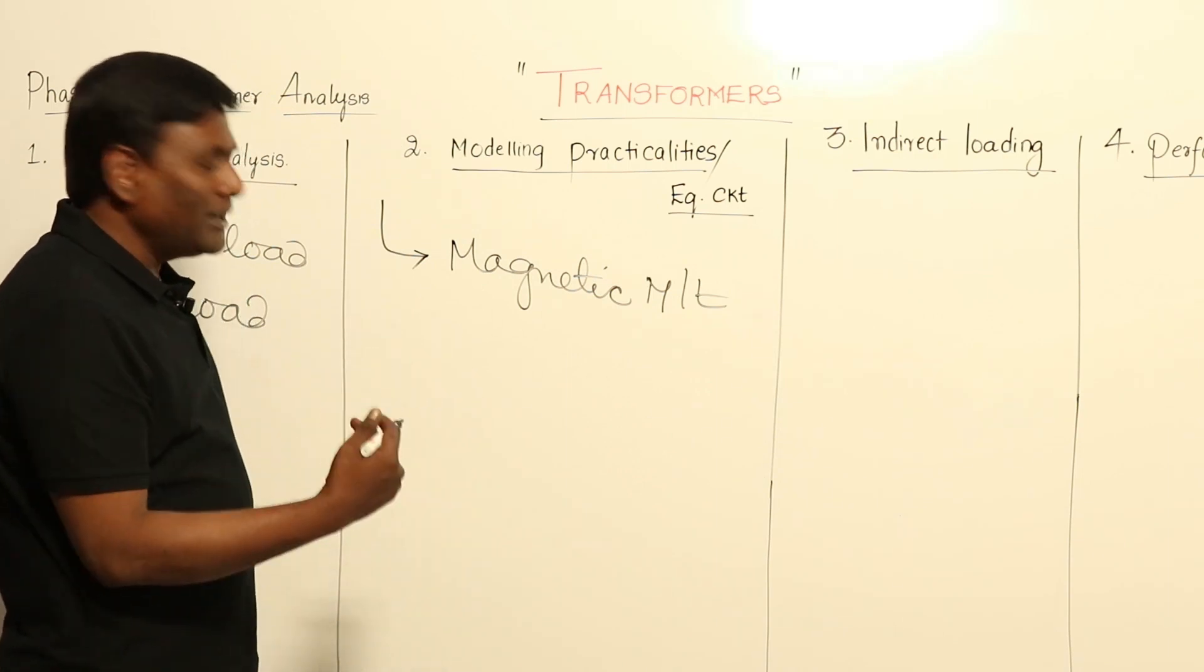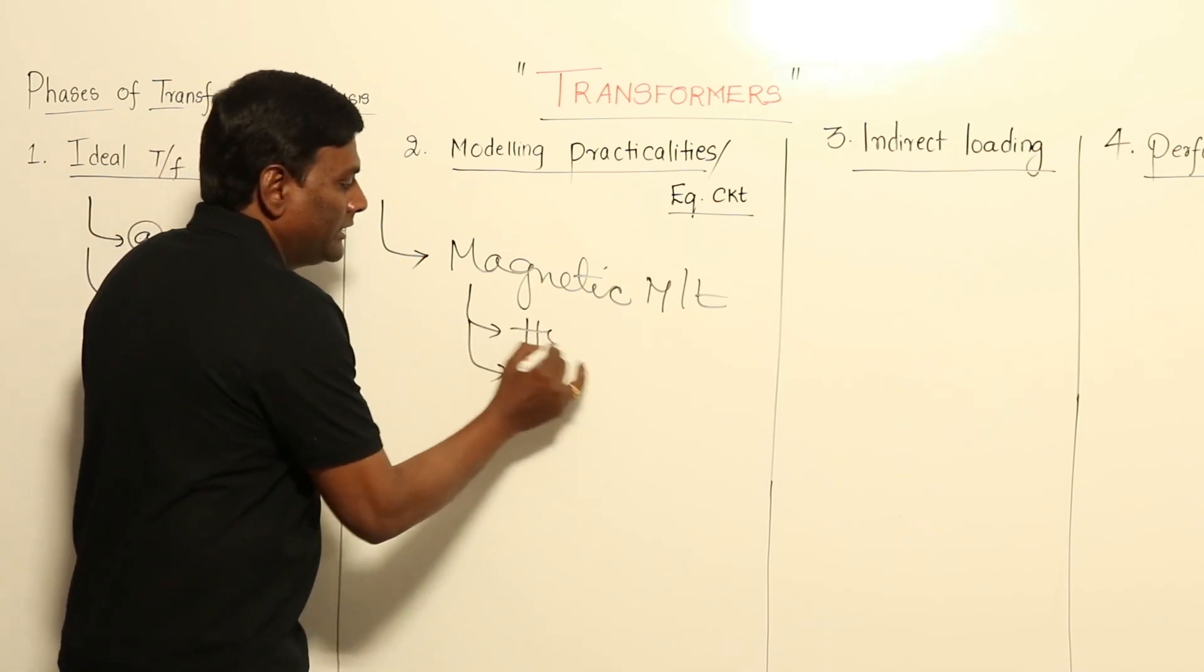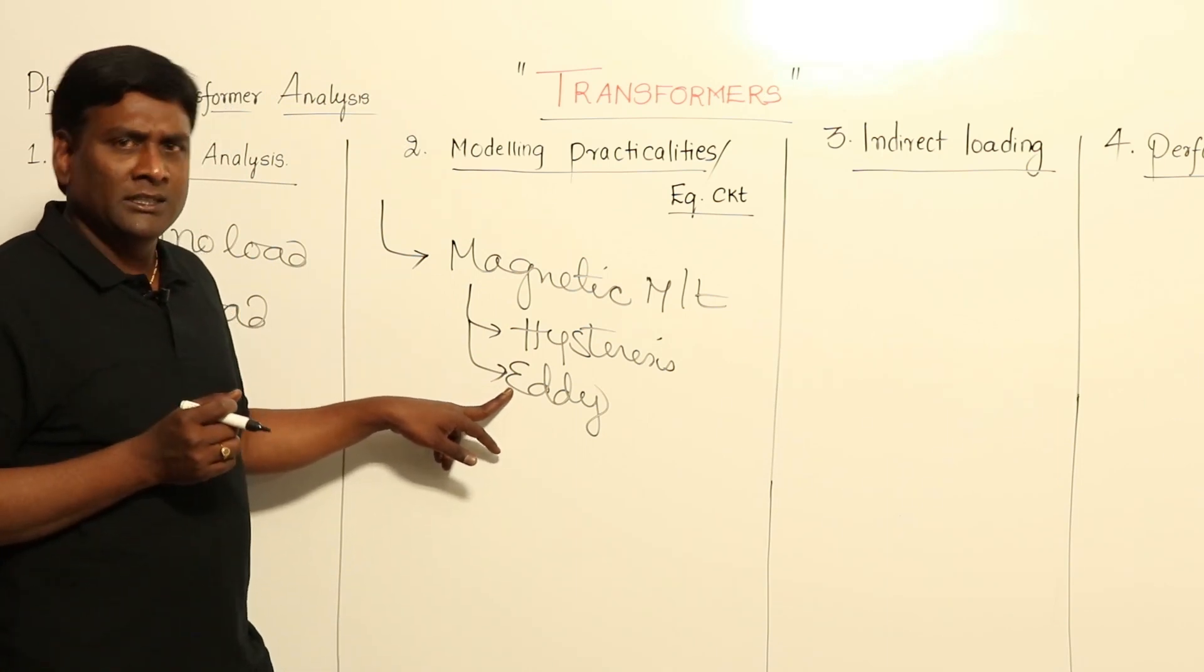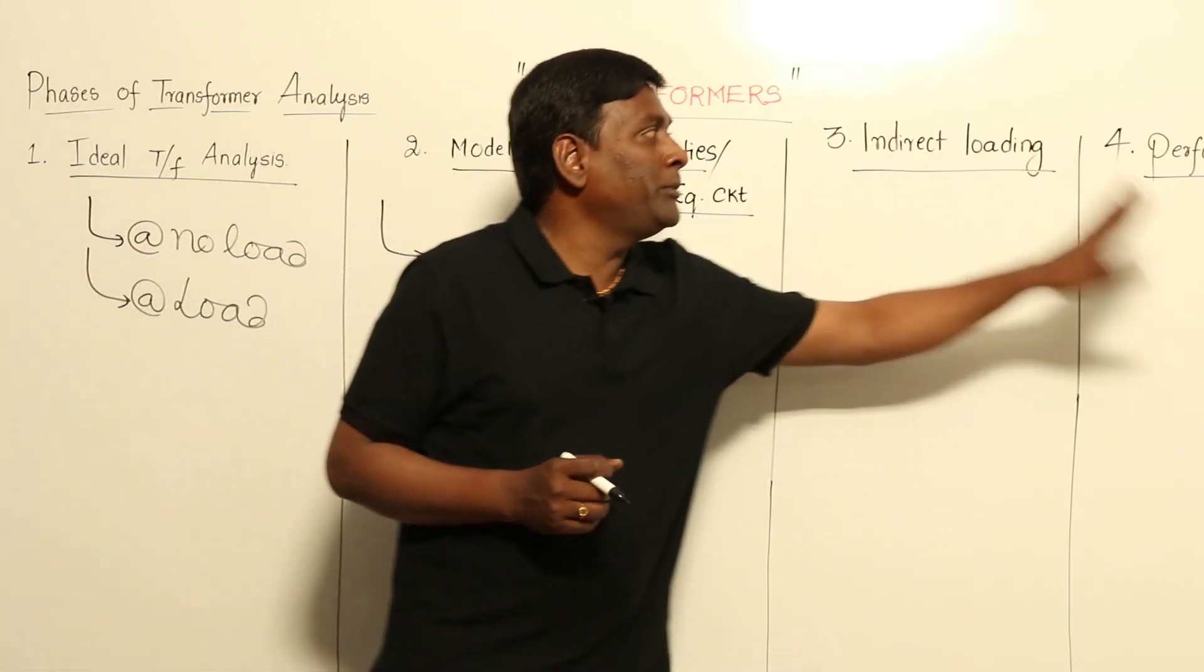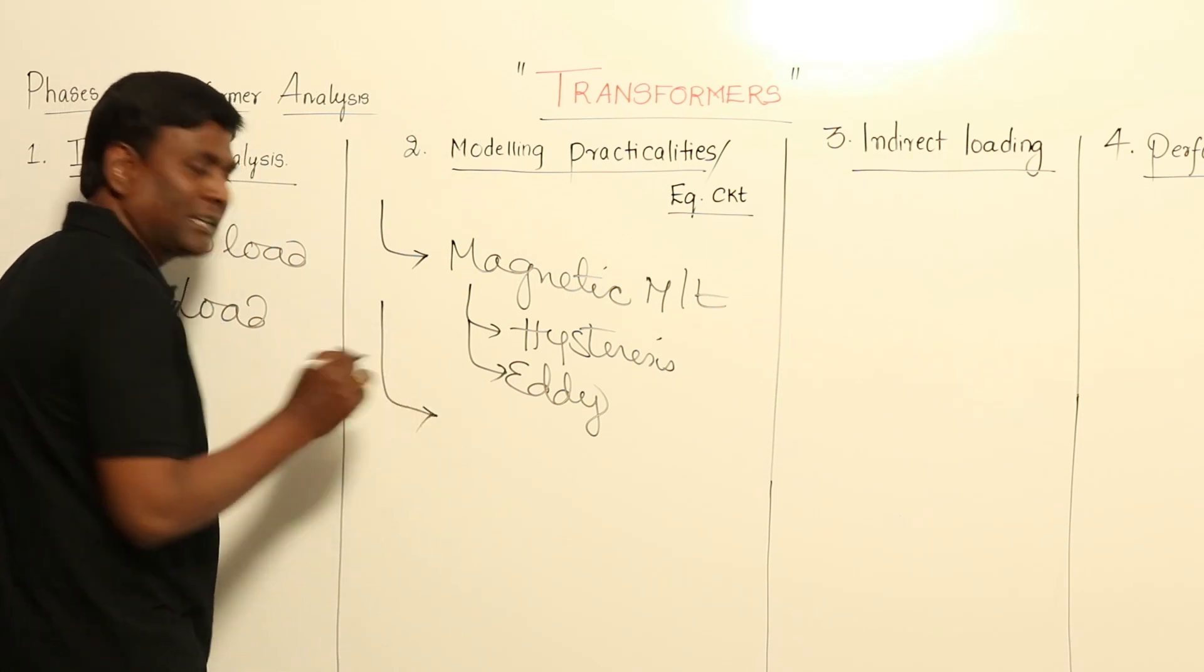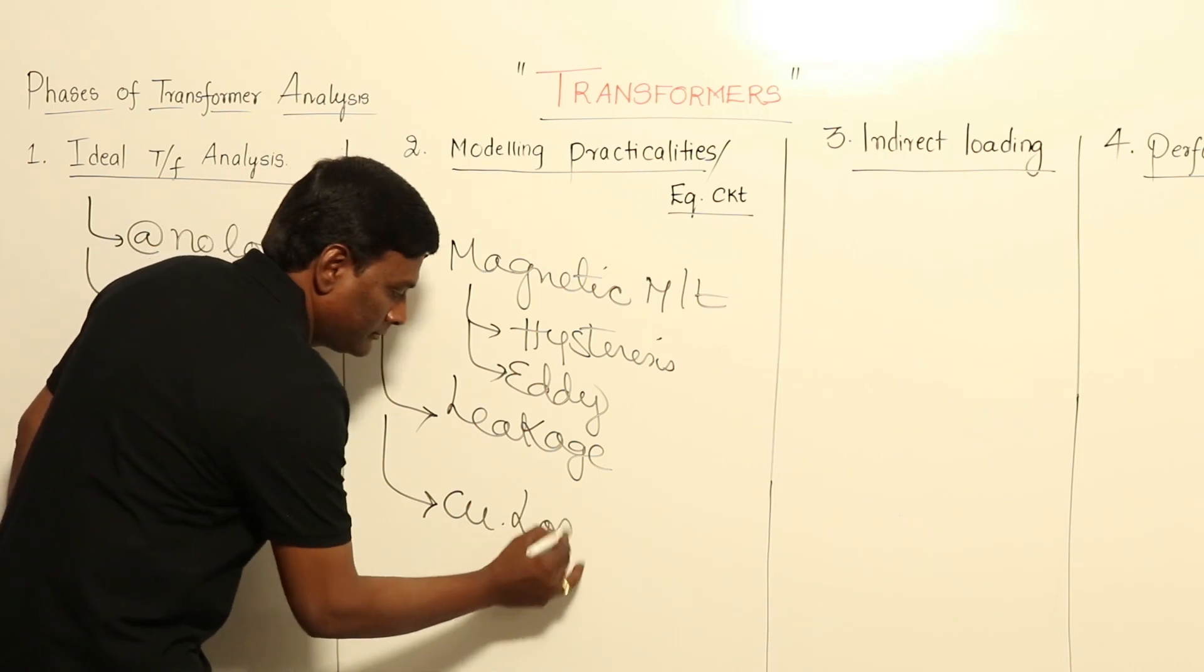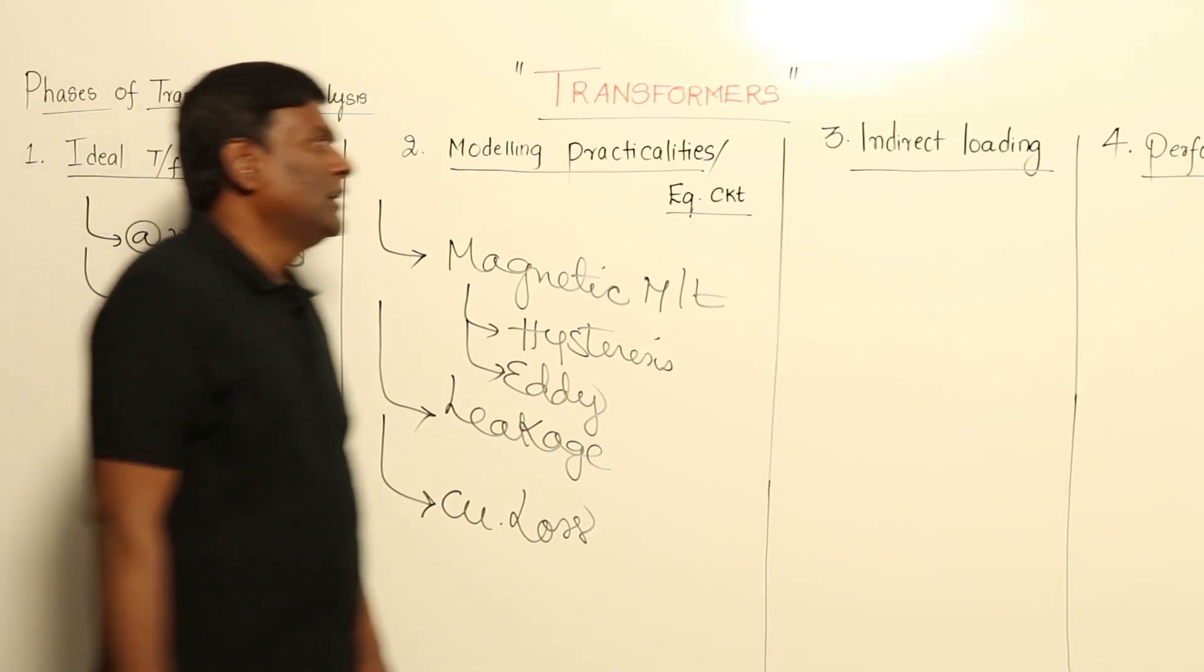Magnetic material has to be modeled. While understanding magnetic material, we are going to get through two subtopics: hysteresis and eddy currents. These two things have to be modeled by using network theory parameters such that those parameter values will be found out in phase three in the indirect loading test and will be used in performance analysis. After that, magnetic circuit, we may have to model leakage, and after that we may have to model copper loss. So with this, phase two will be over.